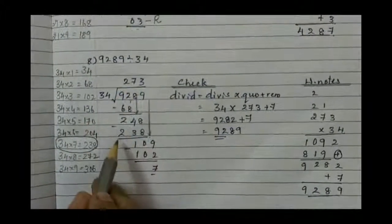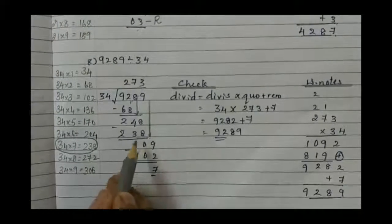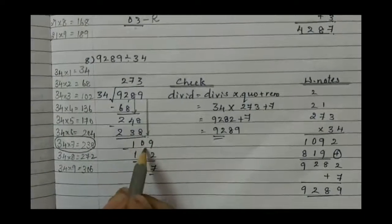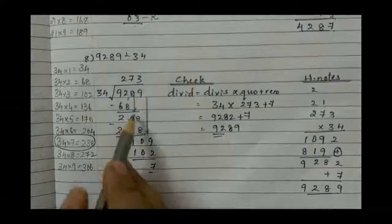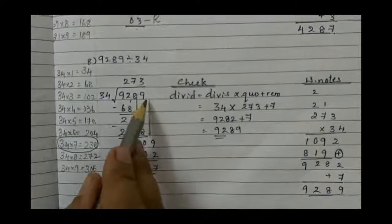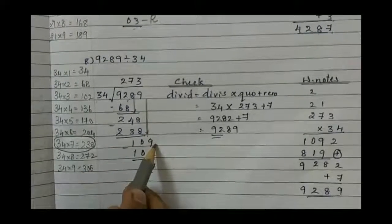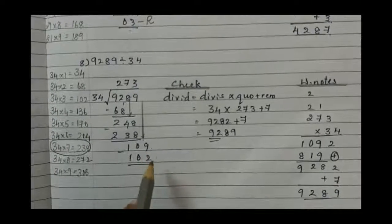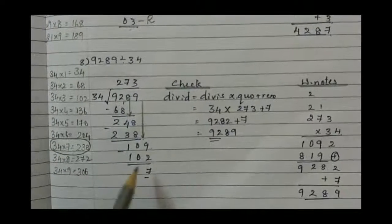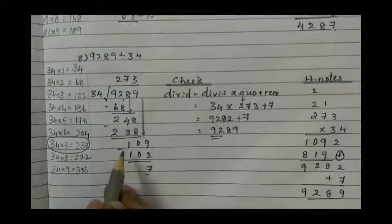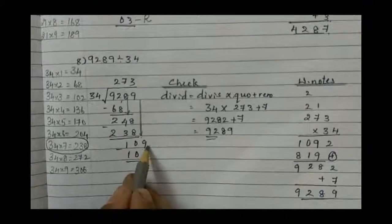Write down in the quotient 7 and bring 238 below. Then subtract it: 8 minus 8 is 0, 4 minus 3 is 1. Bring the last digit, that's 9 beside. Children, you have to write down the numbers one below the other properly while bringing the number also.